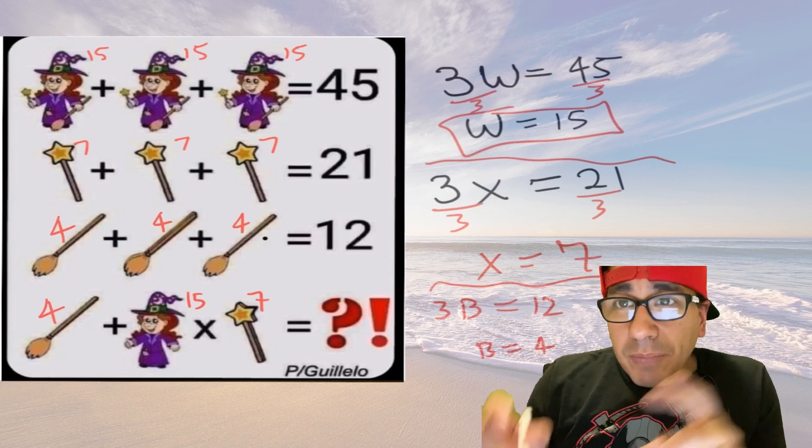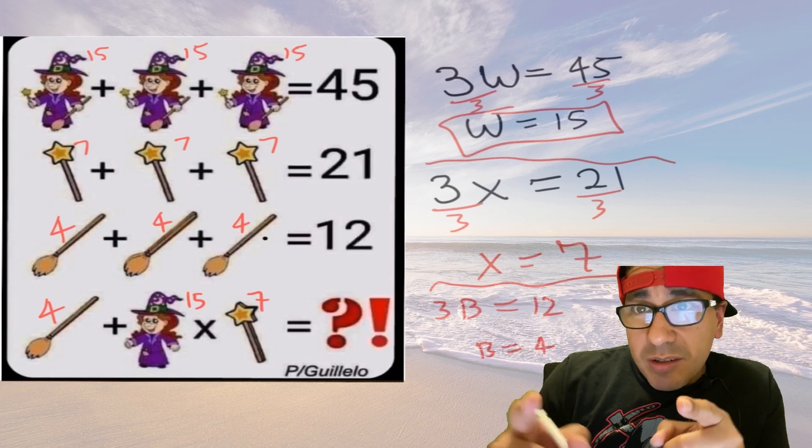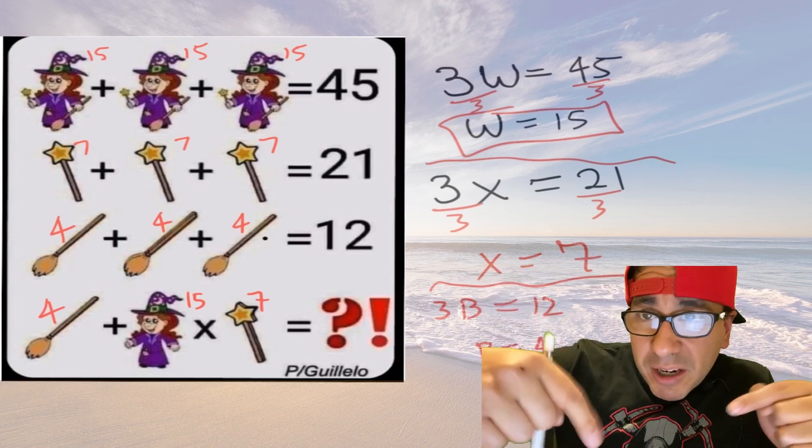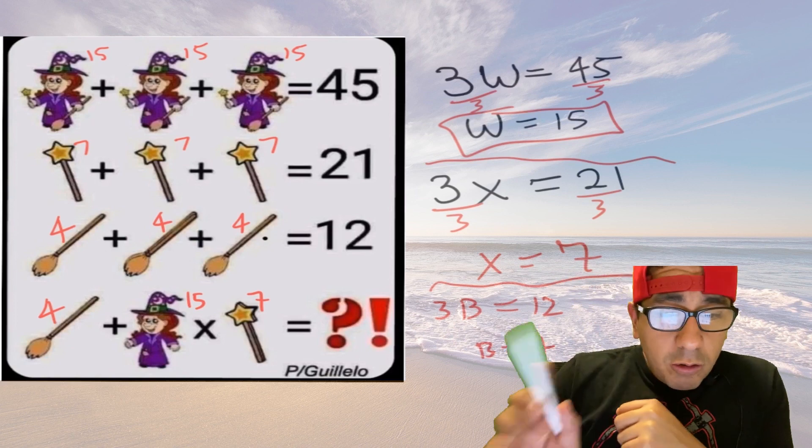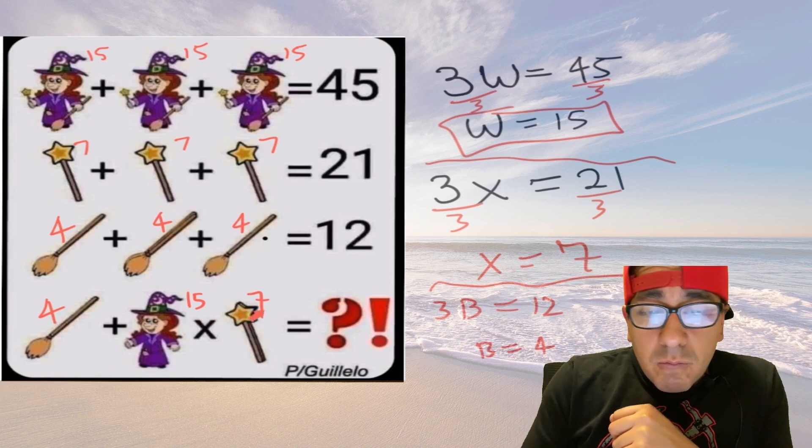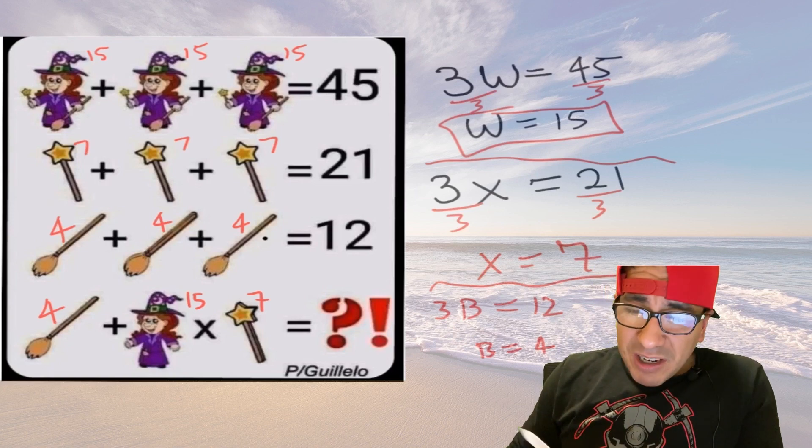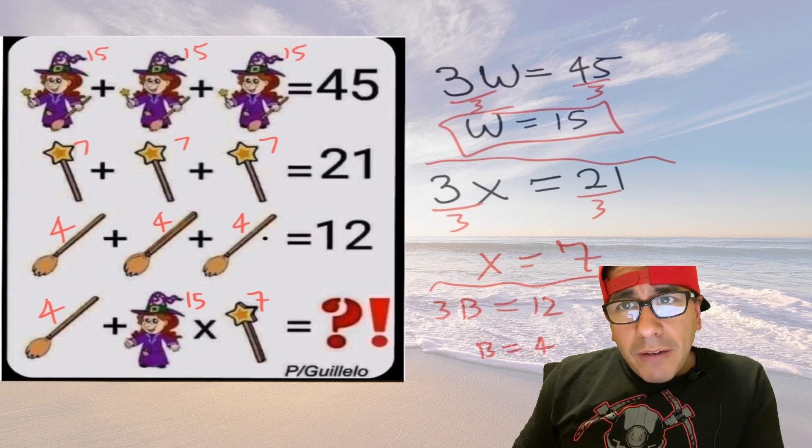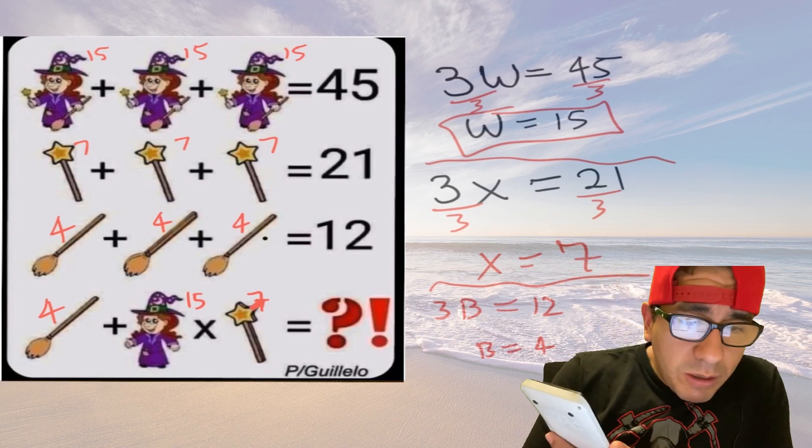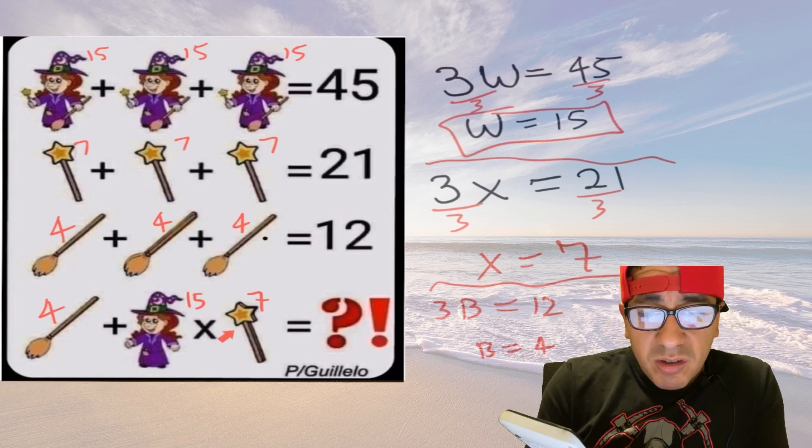So pay attention to the operations. If you want to learn more about order of operations, click my video down below. The order of operations says to multiply 15 times 7 first. Let's make sure so I don't make a fool of myself on YouTube, and we get 105.